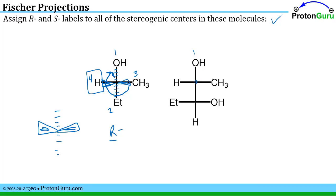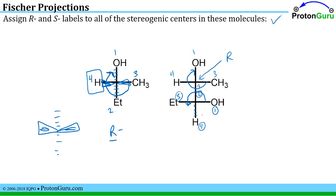For this next structure: priority one is assigned, the whole bottom is two, the methyl is three, and this is four. The fourth priority is pointing towards us — that's backwards of ideal — so we count three, two, one instead of one, two, three. That top stereocenter is the R isomer. For the bottom stereocenter, the H is pointed away from us: counting one, two, three in a counterclockwise direction means that bottom stereocenter is in the S configuration.